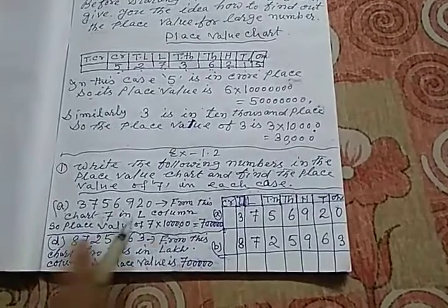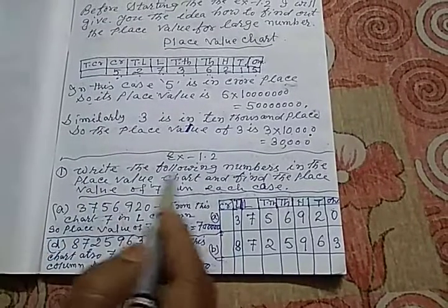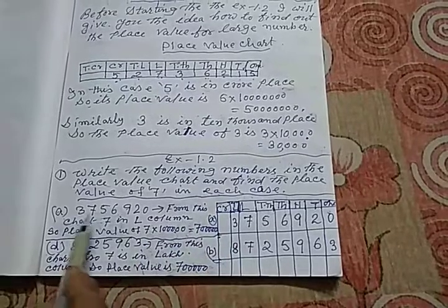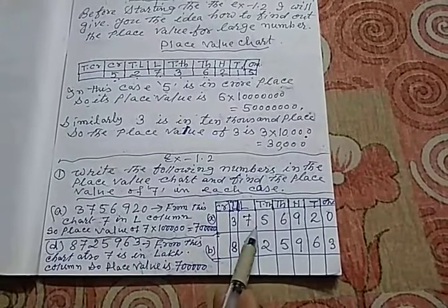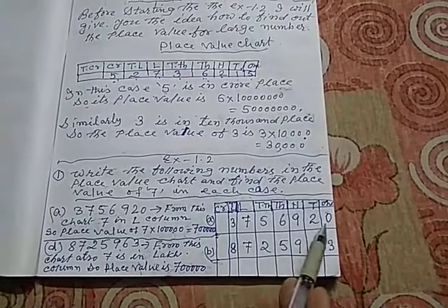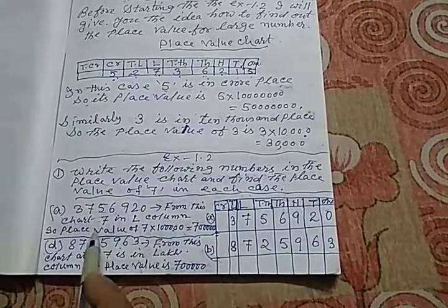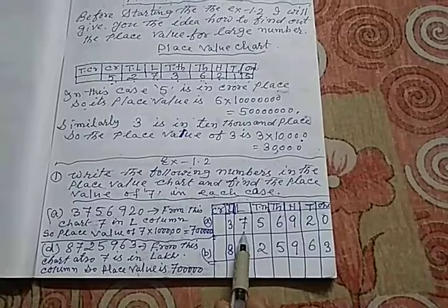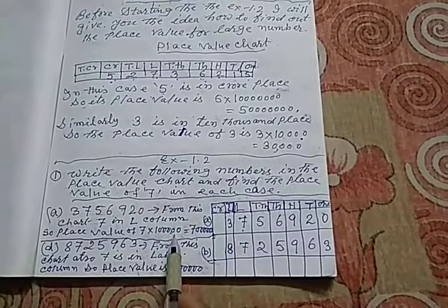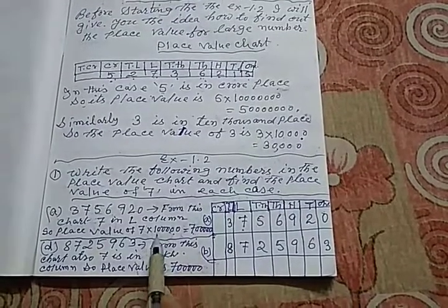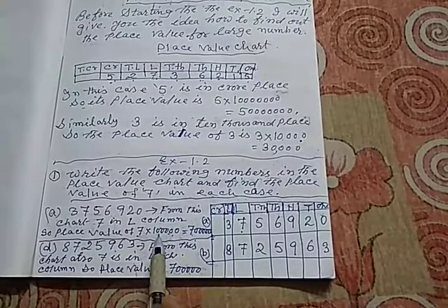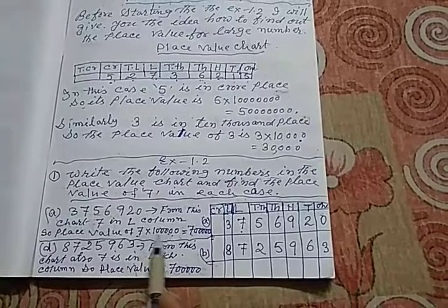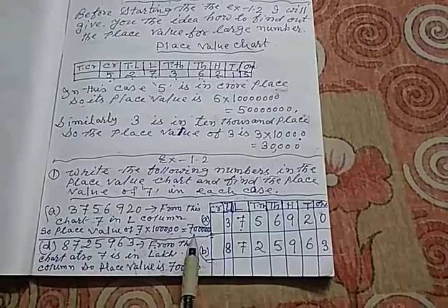Now, come to the exercise, main exercise 1.2. The first item instruction is write the following numbers in the place value chart and find the place value of 7 in each case. Here is the number given. I have put the several digits in several columns as per the columns. The number, in this case, from this chart, first A number mein dekho, 7 is in lakhs place. So its place value will be 7 lakhs.